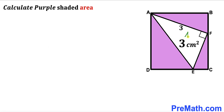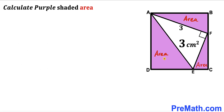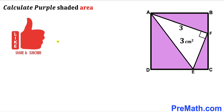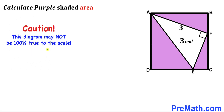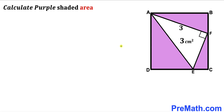In this video we have a white right triangle AFE fully confined in a square ABCD, such that the area of this white triangle is 3 cm² and this side length AF is 3 cm. Our task is to calculate the total purple area — the combined purple regions shown in the diagram. Please keep in mind that this figure may not be 100% true to scale. Let's get started.